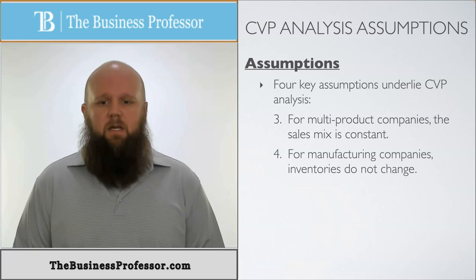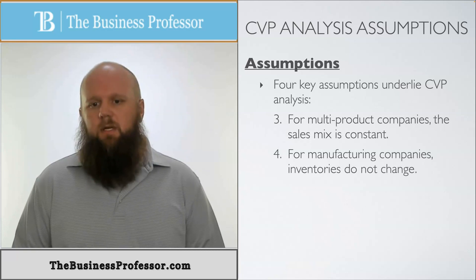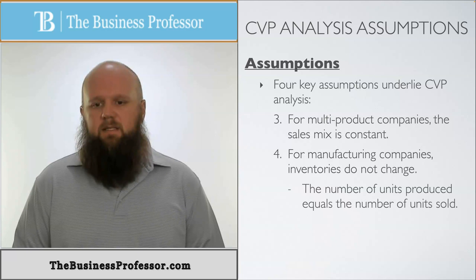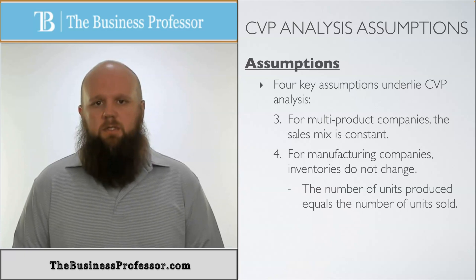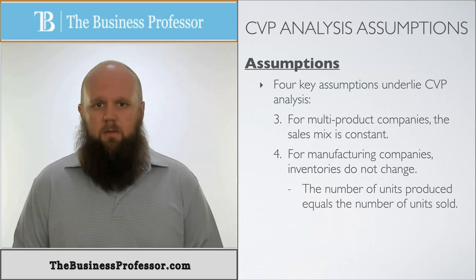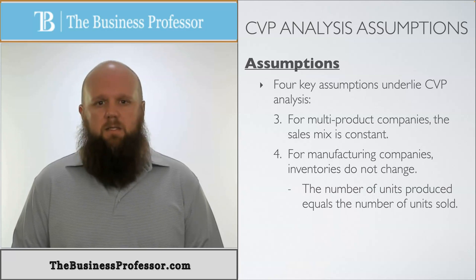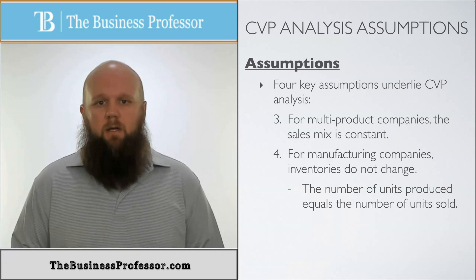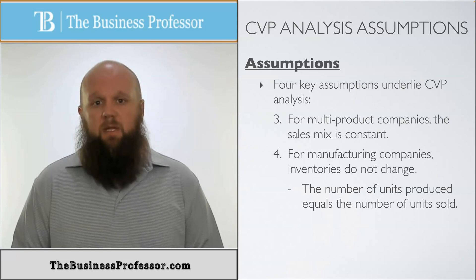Finally, for manufacturing companies, the inventory doesn't change. This means that the number of units that we produce is going to be equal to the number of units that we sell. These are the four main assumptions that have to be made in order for us to do the CVP analysis and rely on the information we get from it.